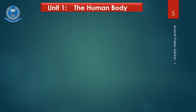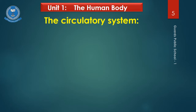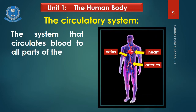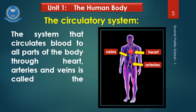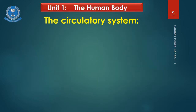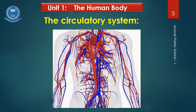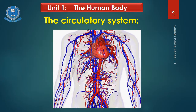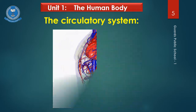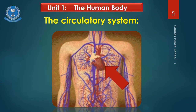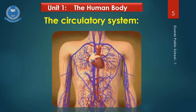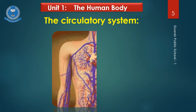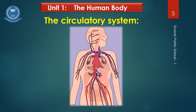The next system circulates blood to all parts of the body through the heart, arteries, and veins — this is called the circulatory system. You can see a picture on your screen showing the heart, the veins in blue, and the arteries in red. The heart is the main engine of the circulatory system; it pumps blood to all parts of the body. The arteries take blood from the heart and the veins bring blood back to the heart, so blood circulates around the body through veins and arteries.